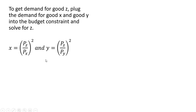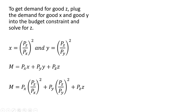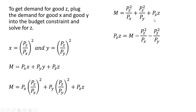To get the demand for good z, we plug the demand for good x and good y into the budget constraint and solve for z. Making those substitutions, the price of good x divided by the price of good x squared simplifies, and similarly for the price of good y divided by the price of good y squared. Moving terms around and dividing through by the price of good z gives us the demand for good z.